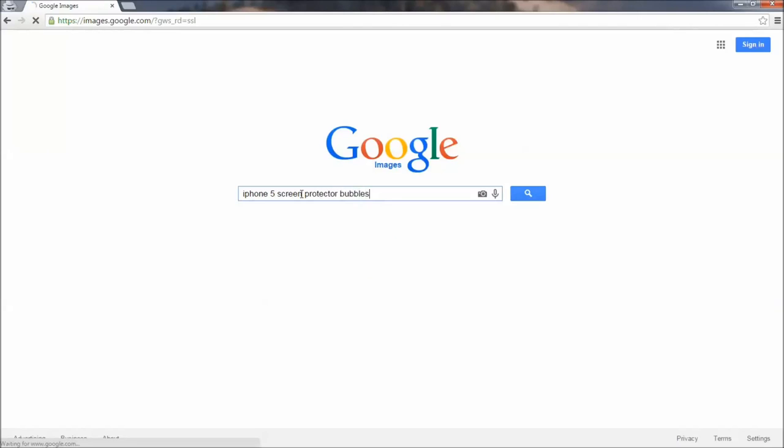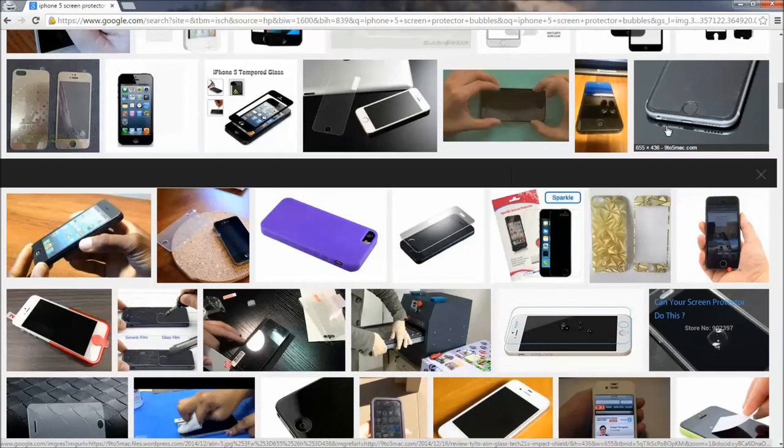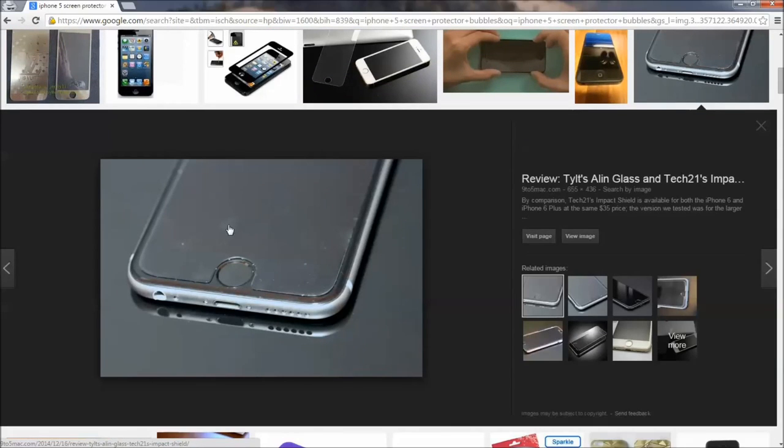Hopefully you'll never experience bubbles to the degree that this first image has. Let's show you a picture here of something that's a little more typical. The larger bubble there and the smaller bubble. The larger one is probably air caused by air trapped, and the smaller one is probably caused by dust or lint particles trapped between the protector and your iPhone's glass.